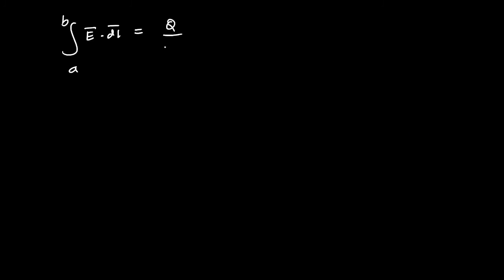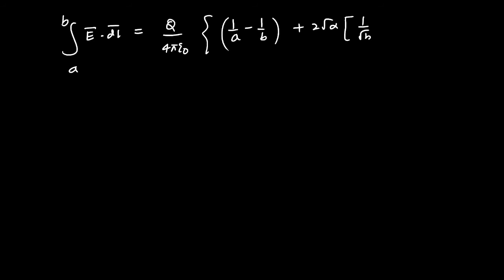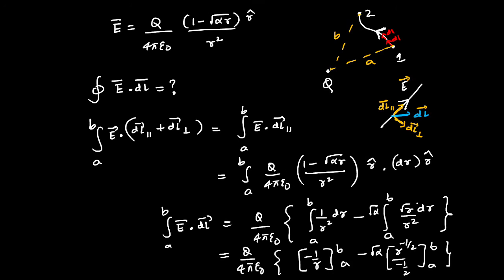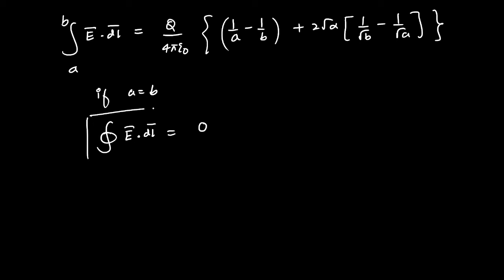Substituting the limits, the integral from a to b of E·dl equals (Q/4πε₀) times [(1/a − 1/b) + 2√α(1/√b − 1/√a)]. When a equals b — meaning we have a closed path — all terms cancel and the result is zero. So even this new electric field satisfies the closed-loop condition, confirming the second option is also a correct statement.